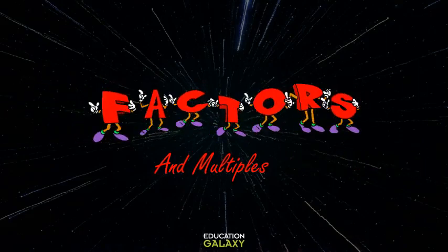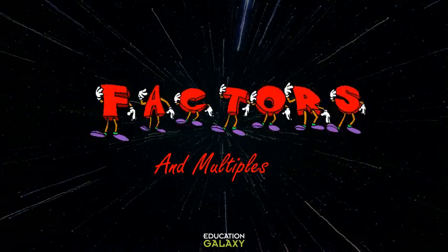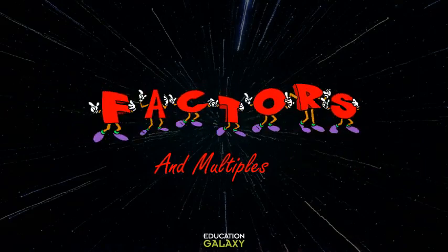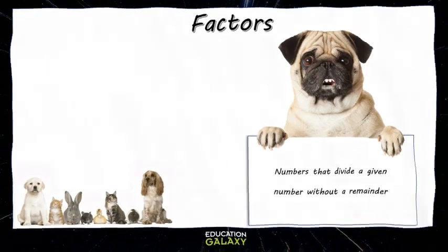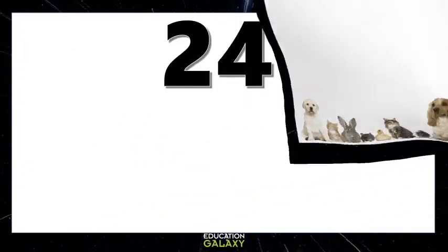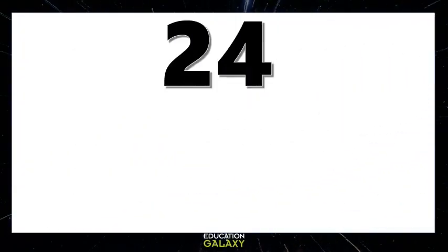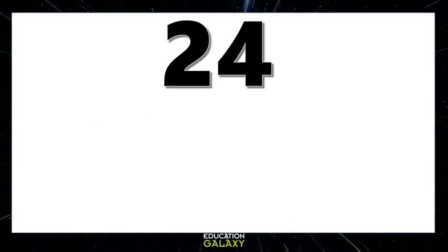Factors and multiples. Factors are numbers that divide a given number without a remainder. For example, let's find the factors of 24.